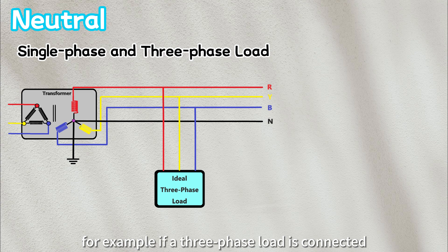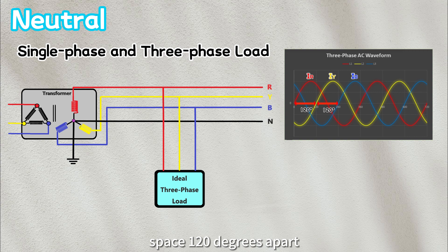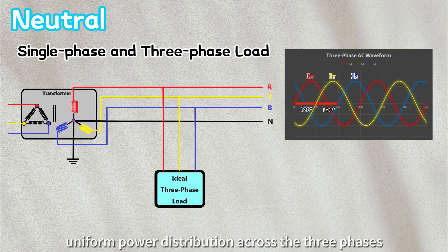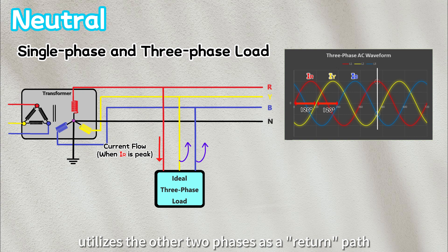if a three-phase load is connected, each phase will have equal voltage and current magnitudes spaced 120 degrees apart. This equilibrium ensures a uniform power distribution across the three phases. The current flowing through each phase wire utilizes the other two phases as a return path, eliminating the need for a neutral cable.